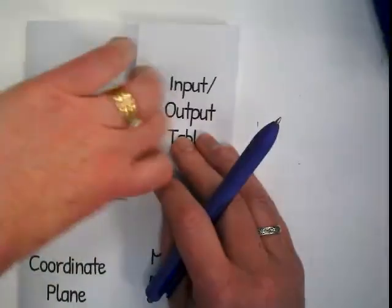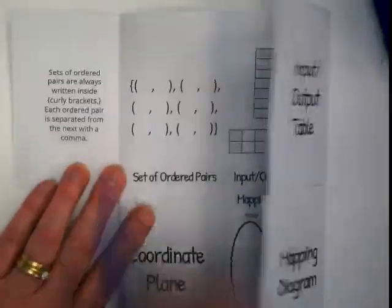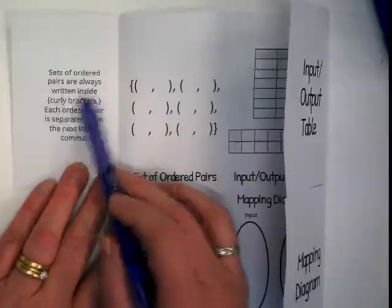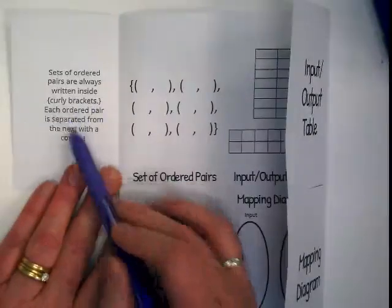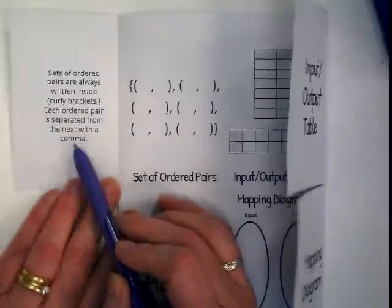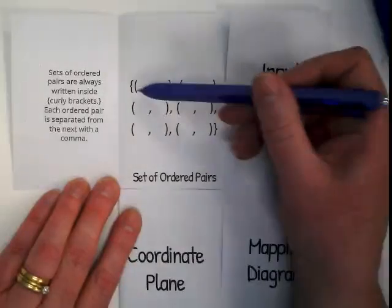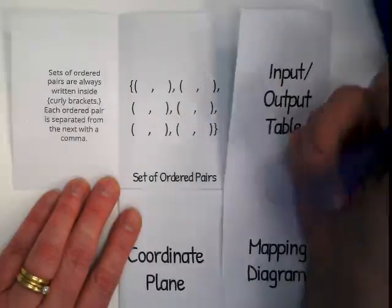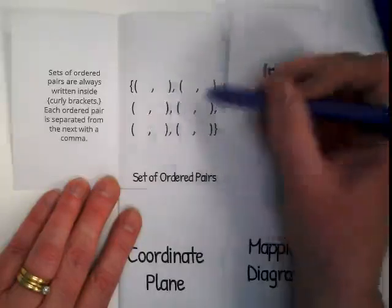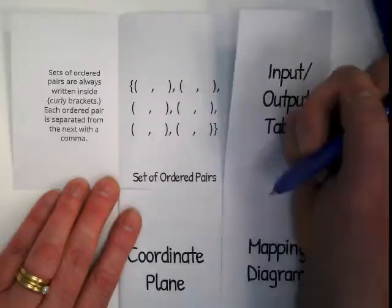Open up the top left flap. Sets of ordered pairs are always written inside curly brackets. Each ordered pair is separated from the next with a comma. Do you see the bracket here? Where's the second bracket? That means that everything in here is one set.